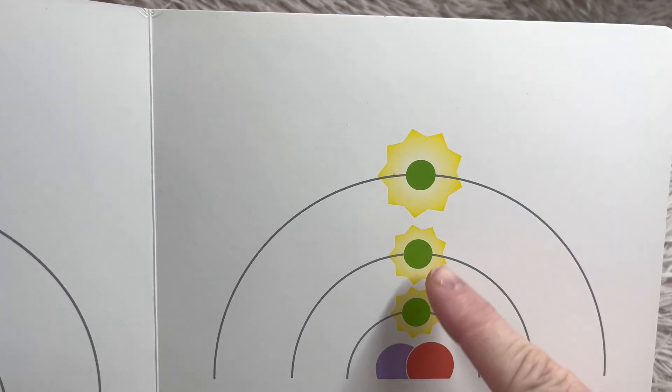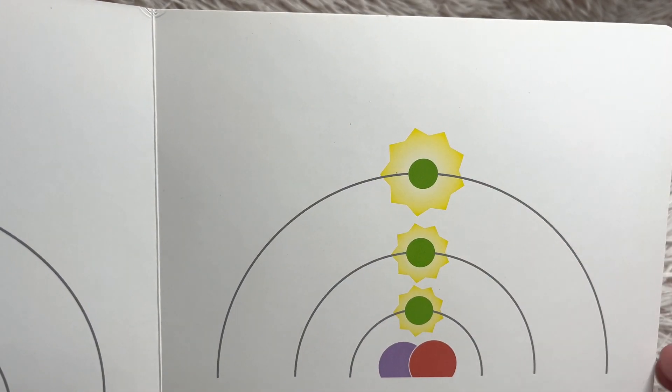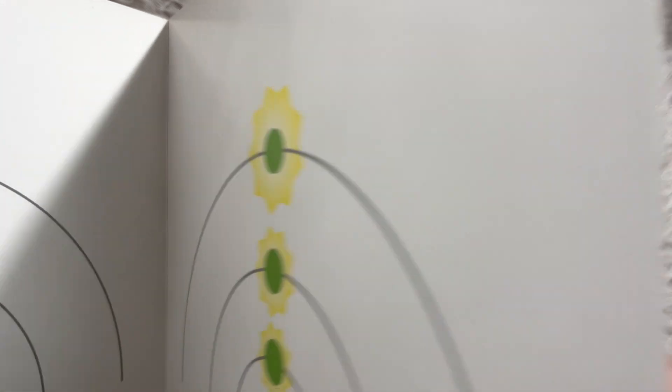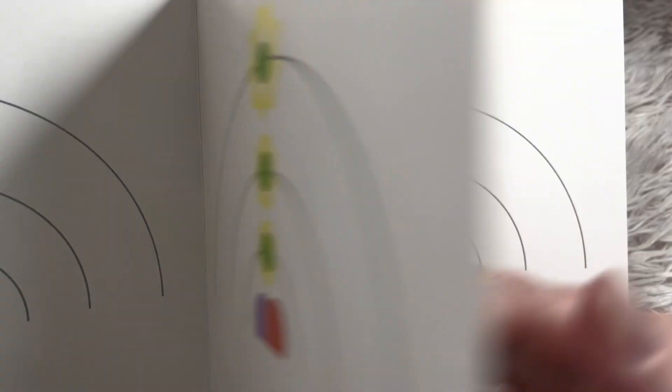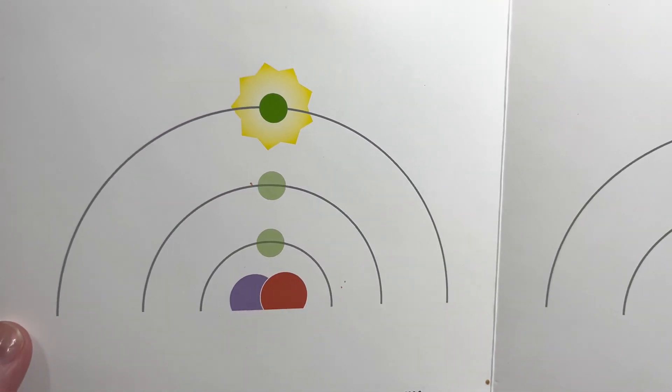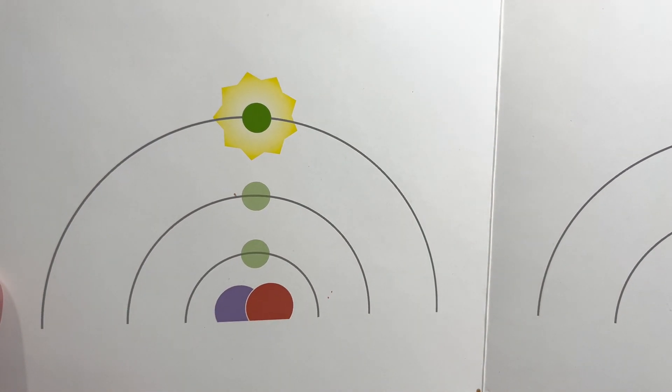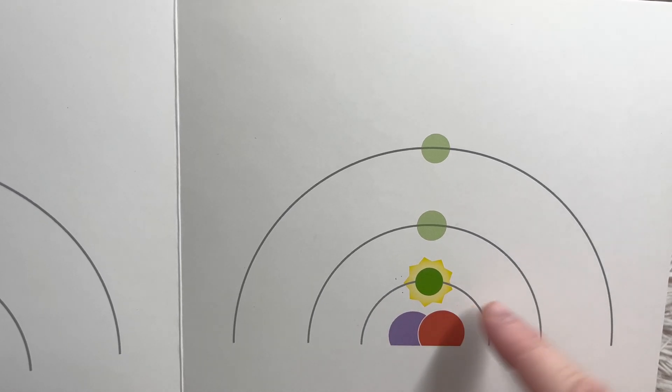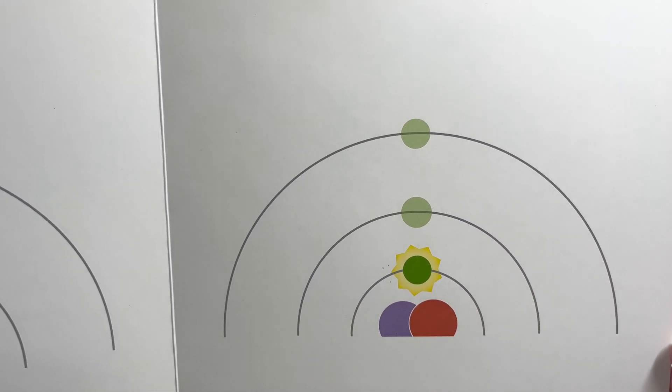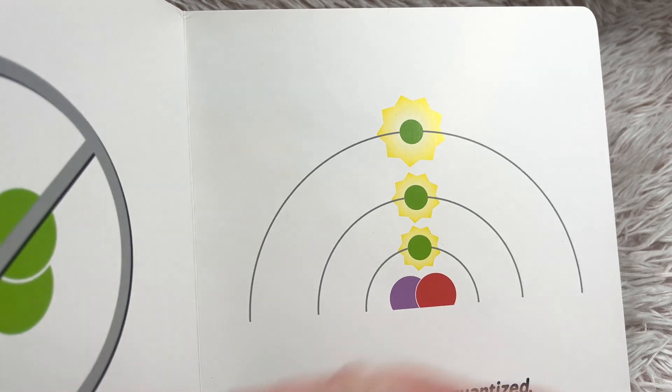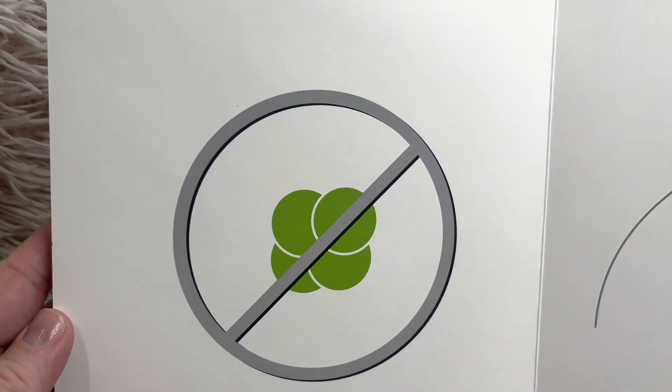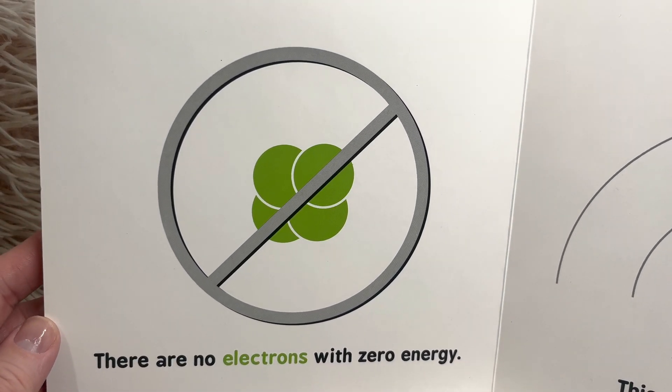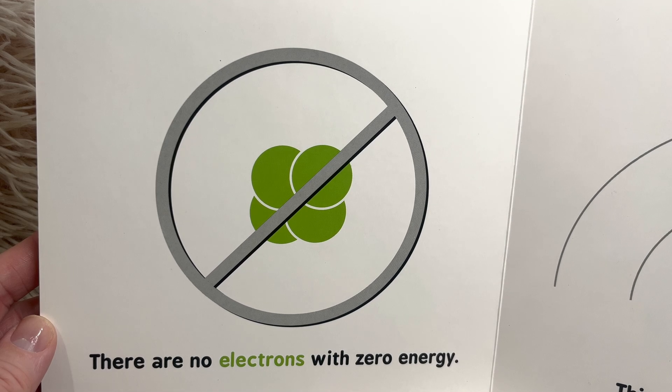All electrons have energy. This electron has the most energy. This electron has the least energy. There are no electrons with zero energy.